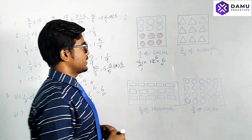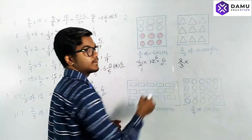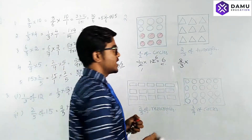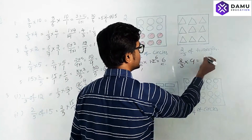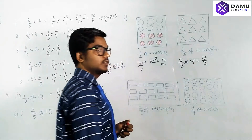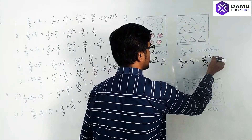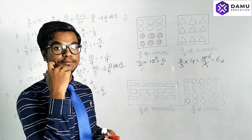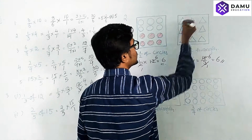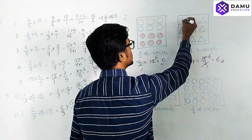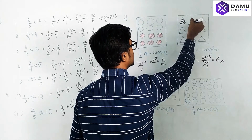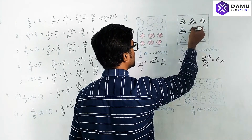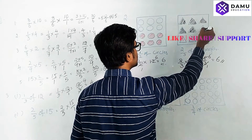Next: 2/3 of triangles. 'Of' means multiplication. There are 9 triangles. 2/9 — wait, 2 × 9 = 18 by 3, so 18/3 = 6. We need to shade 6 triangles. Shade from the top or bottom, whichever — just shade 6 triangles. We should fill them completely, though dashed lines are also acceptable.